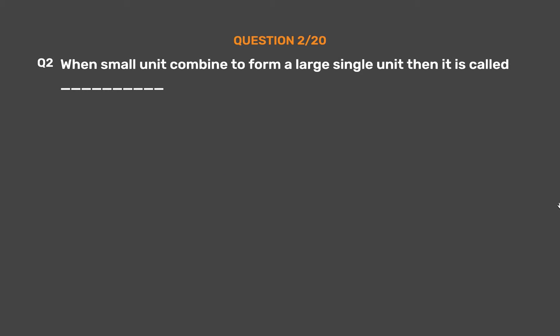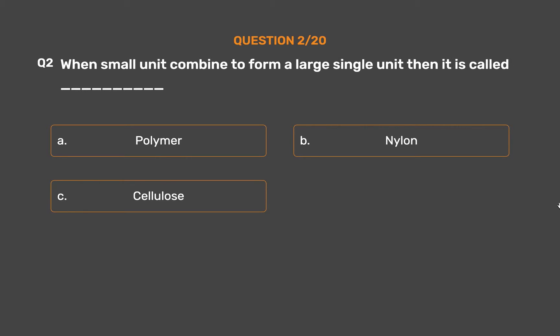Question Number 2. When small units combine to form a large single unit, then it is called ___. Option A: Polymer. Option B: Nylon. Option C: Cellulose. Option D: None of these.